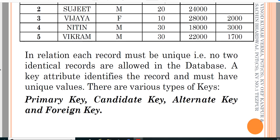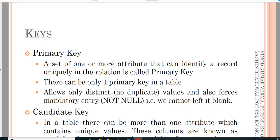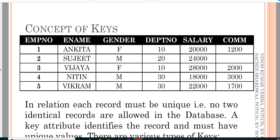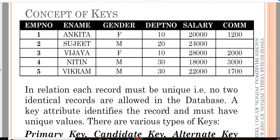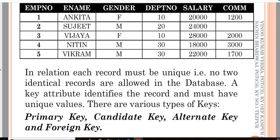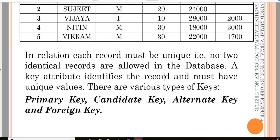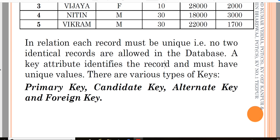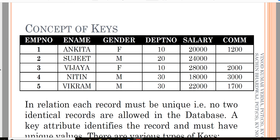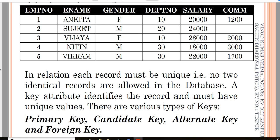In a relation, each record must be unique and no two identical records are allowed. A key attribute identifies the record and must have a unique value. The primary key is the unique identifier — it will not be duplicated and serves as the identity of each record.